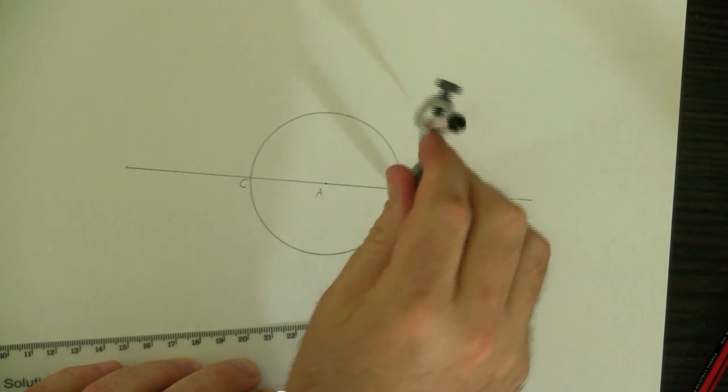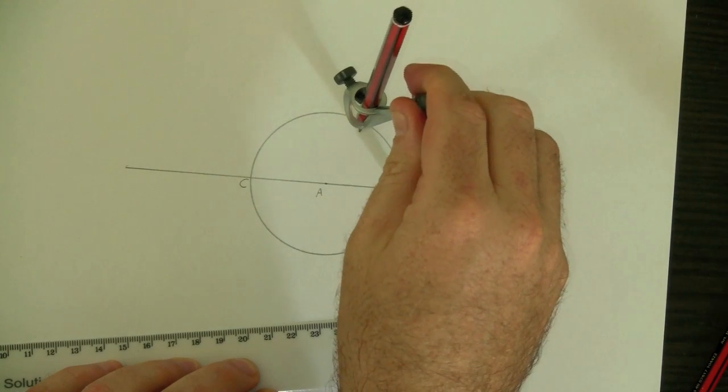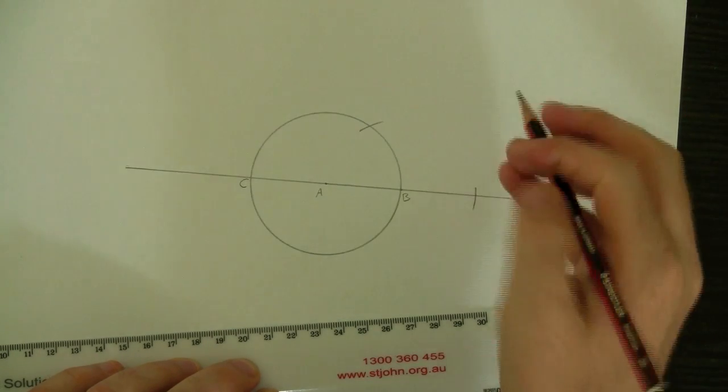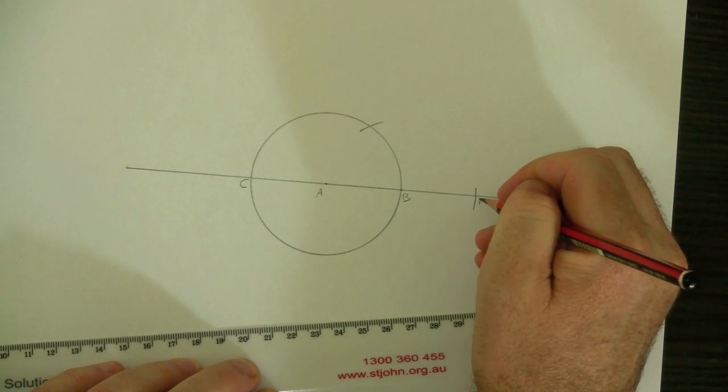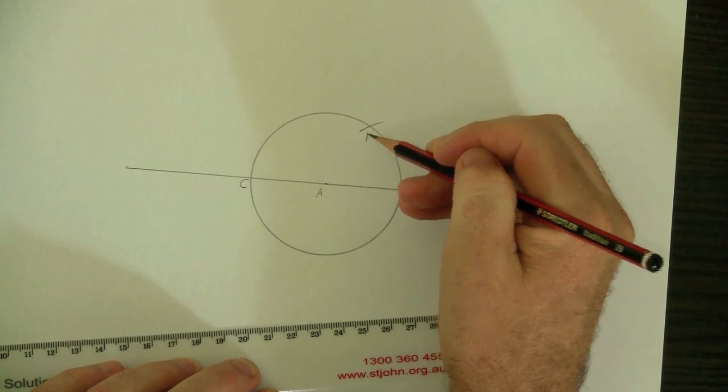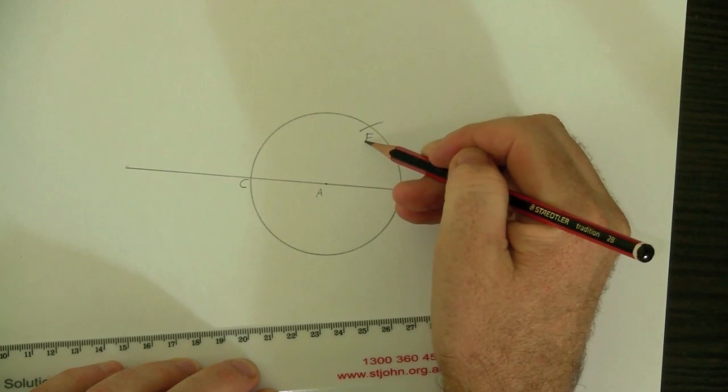While we've got the compass point on B, let's also find this point here. And we'll give these names. This point on the line we'll call D, and this point up here, above A and B, we'll call E.